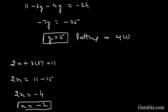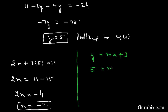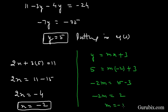Now we find the value of m such that x equals to minus 2 and y equals to 5 satisfy the equation y equals to mx plus 3. Substituting: 5 equals to m times minus 2 plus 3, so minus 2m equals to 5 minus 3, which means minus 2m equals to 2, therefore m equals to minus 1.